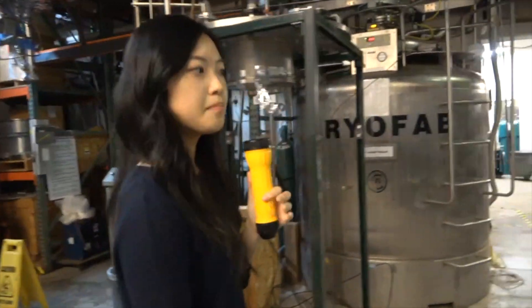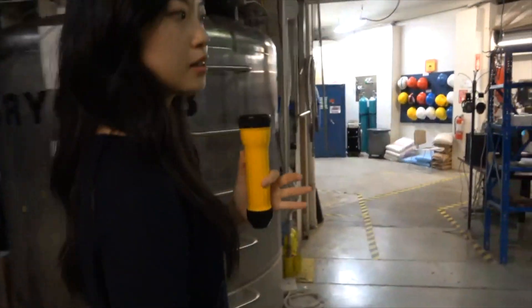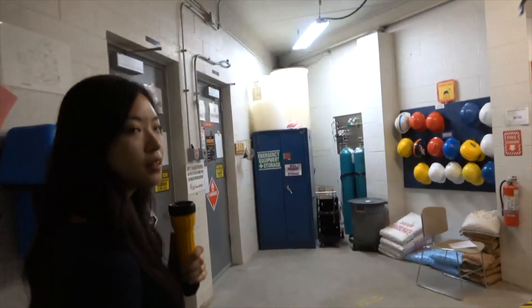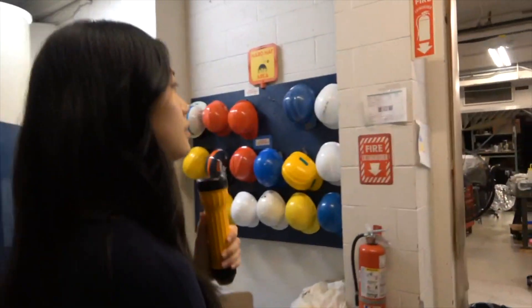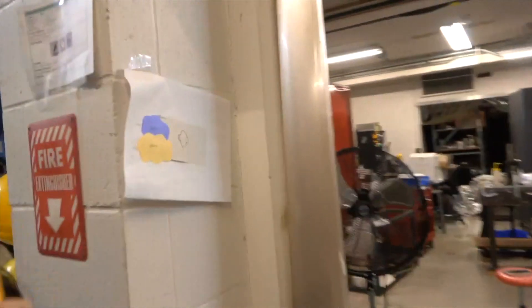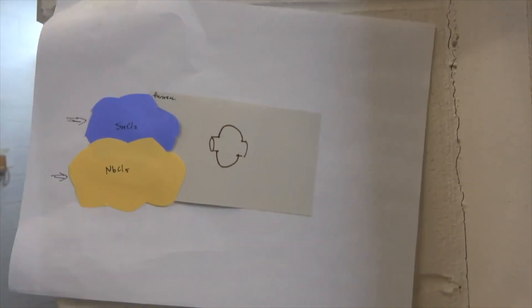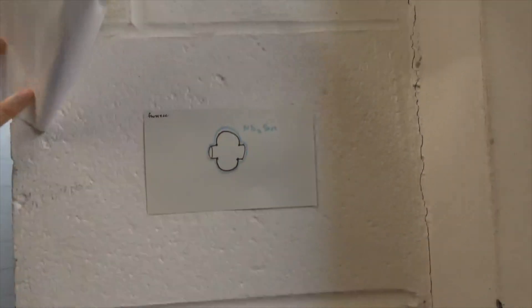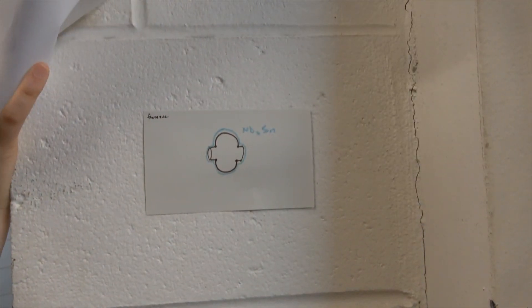So, my group has been investigating a method to create this material called chemical vapor deposition, or CVD. In this process, you pump two gases, niobium chloride and tin chloride, into a furnace with the cavity. The gases then react and form a layer of niobium tin on the surface.